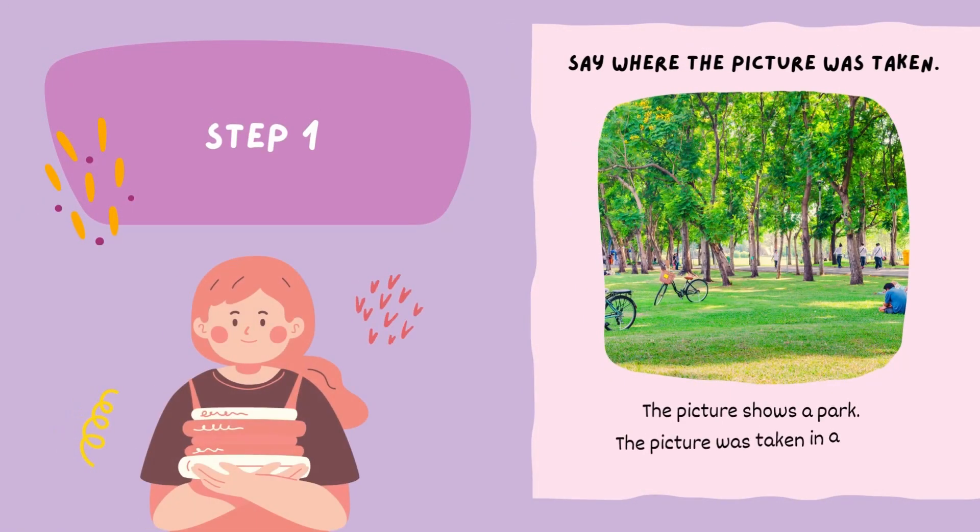Step 1: Say where the picture was taken. For example: 'The picture shows a park,' or 'The picture was taken in a park,' or 'The picture depicts a park.'